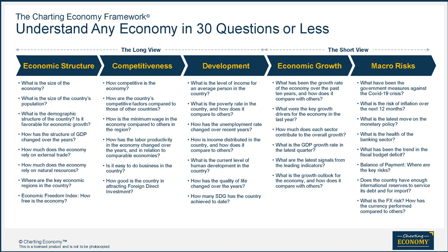Our framework gives you both long and short views. Only relevant questions are grouped into five categories: economic structure, competitiveness, development, growth, and macro risks. There are around 30 questions in total. We will introduce the importance of each question, the indicators involved, and how to analyze and interpret them. At the end of each question, there will be an attachment with our latest chart on the involved indicators. If it's your first time, we advise that you go in order of the course outline. For more experienced participants, you can go in any order you prefer. In the last unit of the course, you can download the PDF file of our latest publication of the economy.